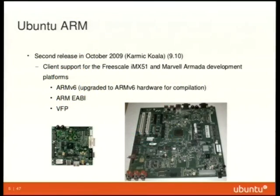The second release was October 2009. We added another board, the Marvell Armada. We upgraded the archive to ARMv6 because we were able to get some better hardware. And we added vector floating point, which we hadn't been able to put on the ARMv5 libraries.